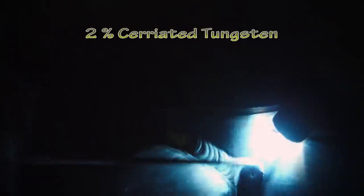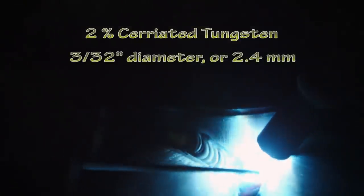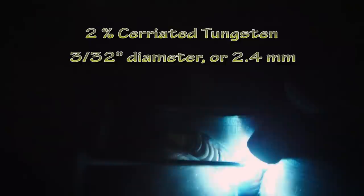Welding round tubes is challenging. Your hands are constantly moving, keeping the torch at the correct angle and feeding the rod into the puddle. I'm using a 2% ceriated tungsten, 3/32 inch diameter or 2.4 millimeters, sharpened to a fine point.